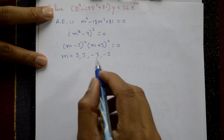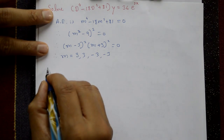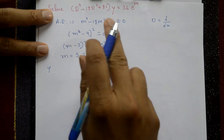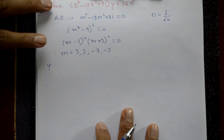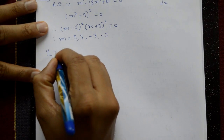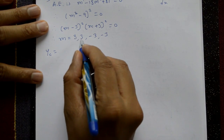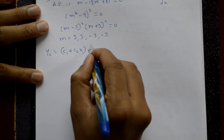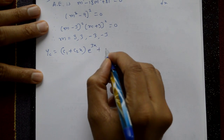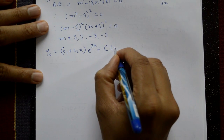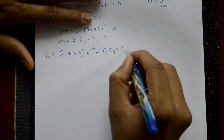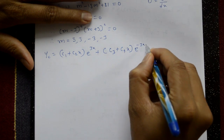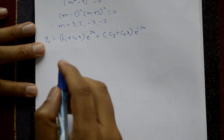Here D stands for d/dx in general. The complementary function, since two roots are the same: yc = (c1 + c2·x)e^(3x) + (c3 + c4·x)e^(-3x). This is the complementary function.